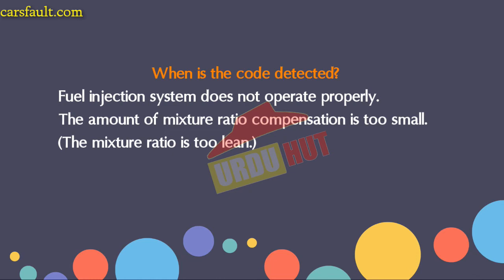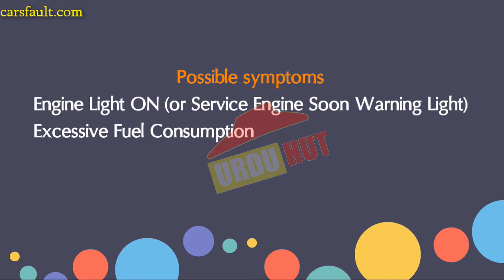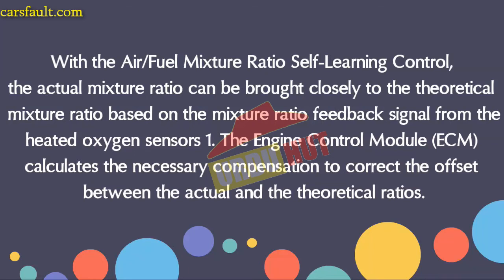So what are you going to do if you detect the P0171 code? In a Toyota fuel injection system that does not operate properly, the amount of mixture ratio compensation is too small, meaning the mixture ratio is too lean. The possible symptoms are: first, the service engine soon warning light blinking; second, excessive fuel consumption.